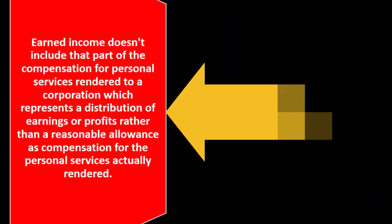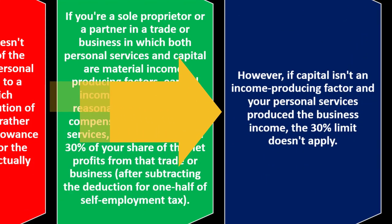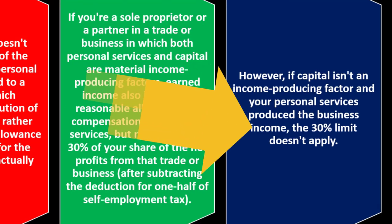Earned income does not include compensation for personal services rendered to a corporation that represents a distribution of earnings or profits rather than a reasonable allowance for services. If you're a sole proprietor or partner where both personal services and capital are income-producing factors, earned income includes a reasonable allowance for compensation, but not more than 30% of your share of net profits after subtracting the deduction for one half of self-employment tax. However, if capital isn't an income-producing factor and personal services produced the business income, the 30% limit doesn't apply.